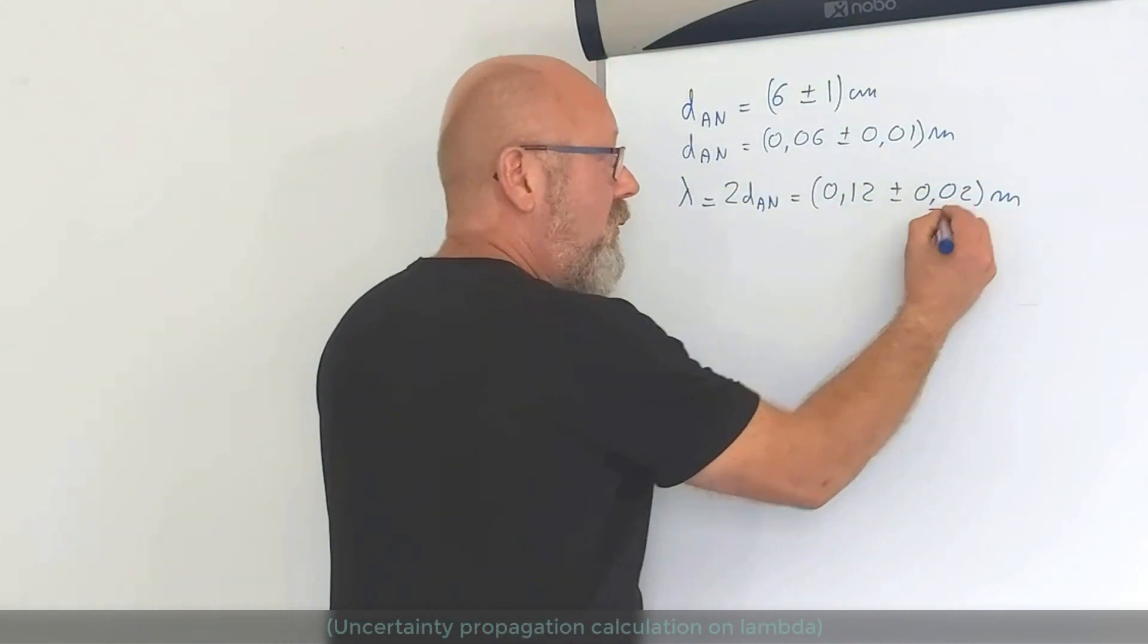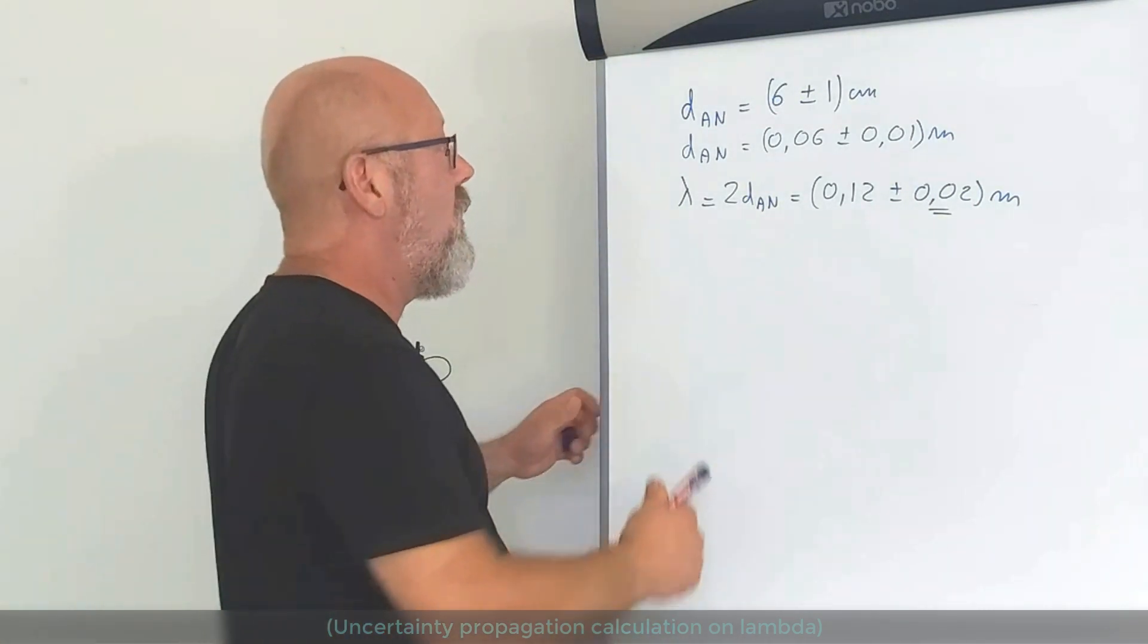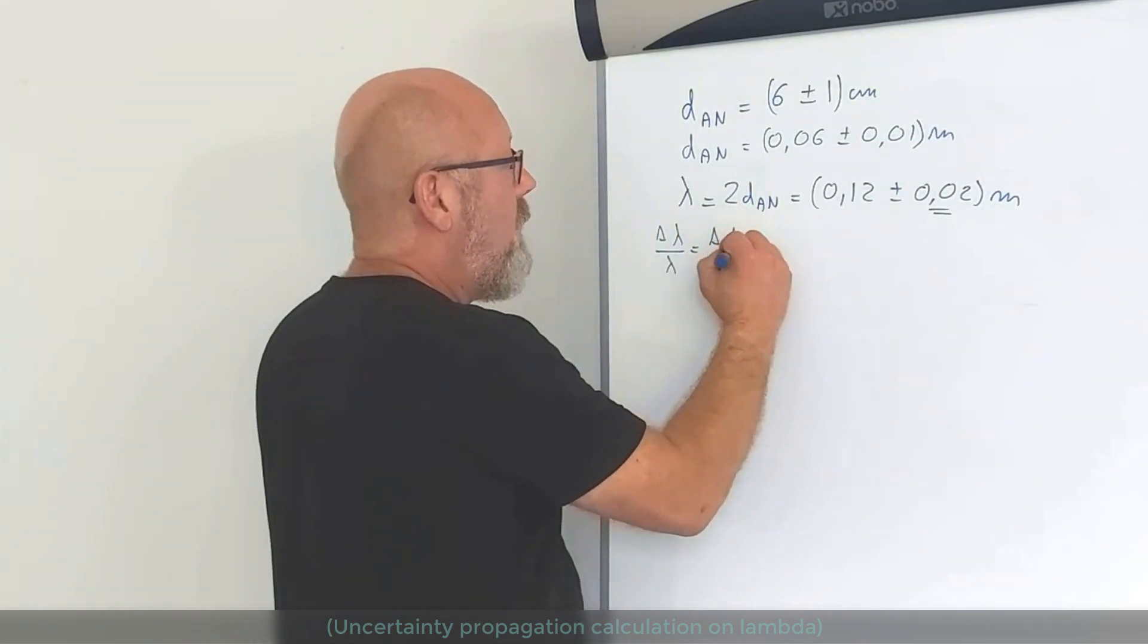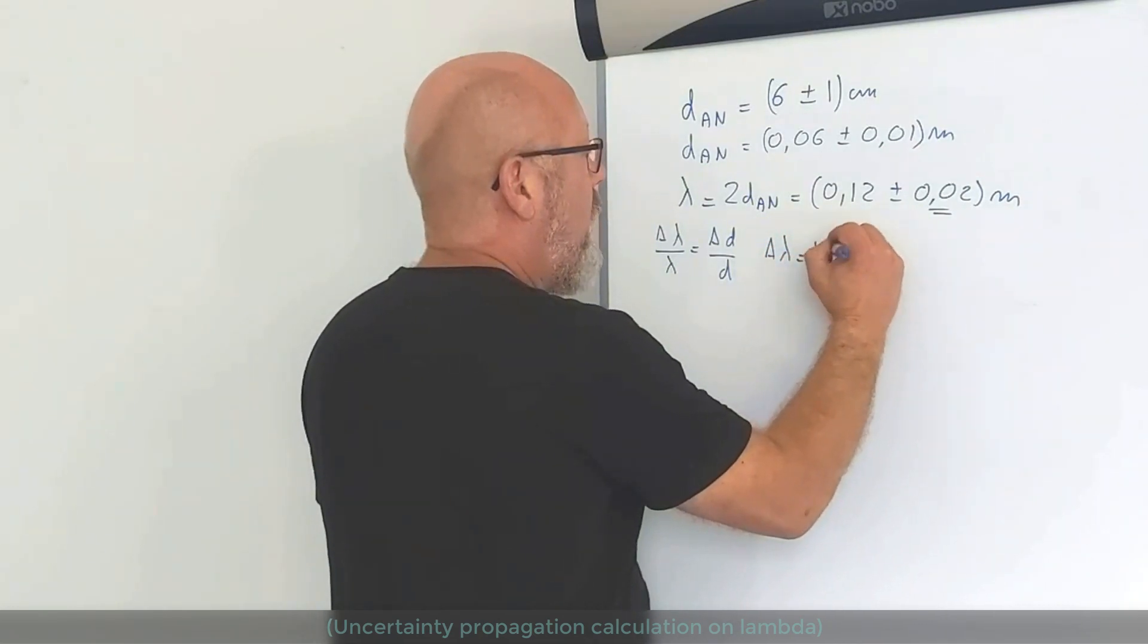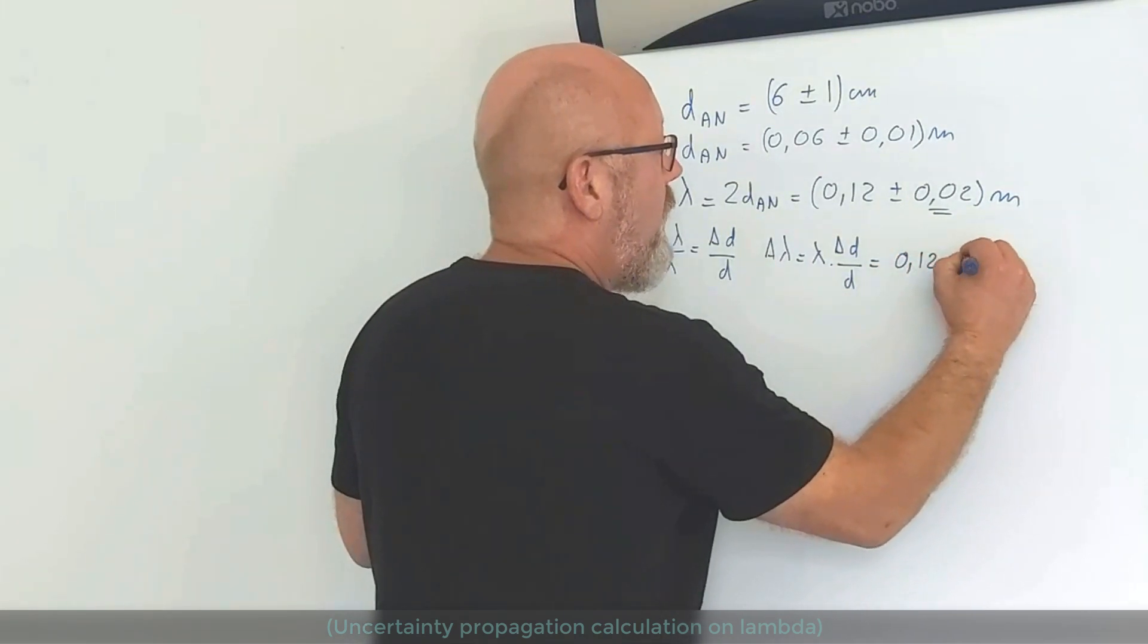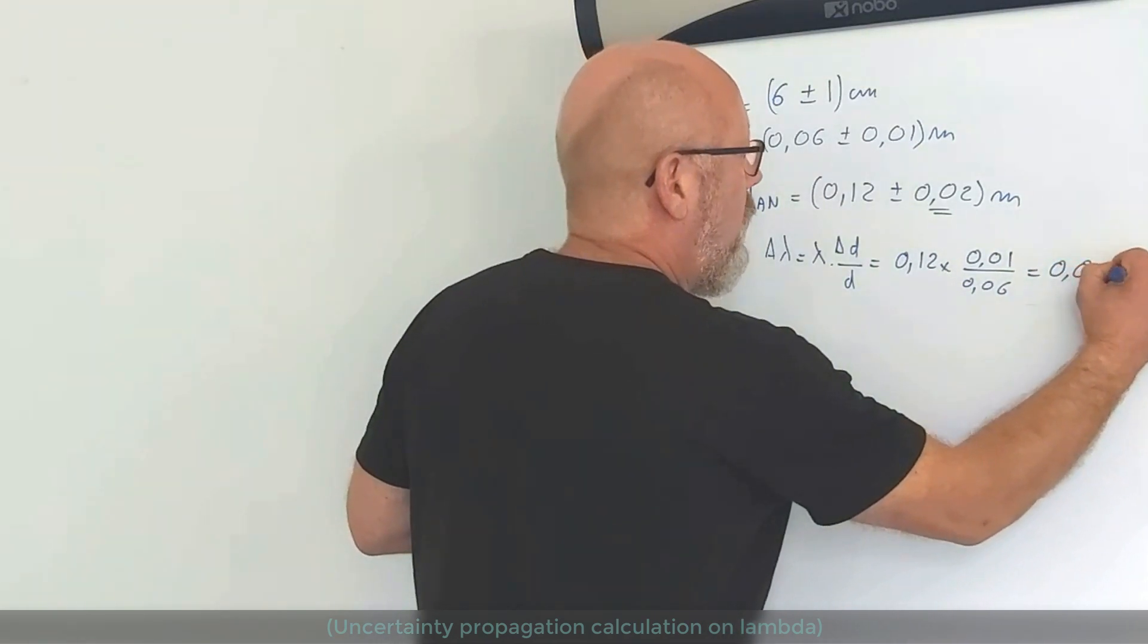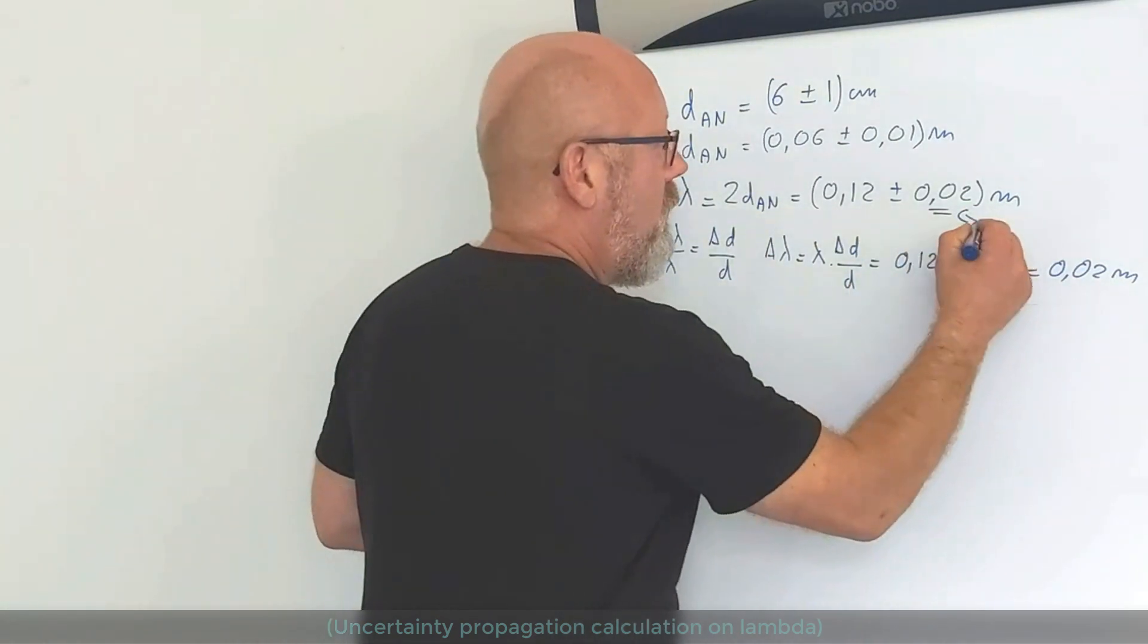Now, to prove this to you, I can actually do a quick uncertainty calculation based on this formula. Delta lambda over lambda is equal to delta d over d. Therefore, delta lambda is equal to lambda by delta d over d. That is 0.12 multiplied by 0.01 divided by 0.06 and you get 0.02 meters that I put here.